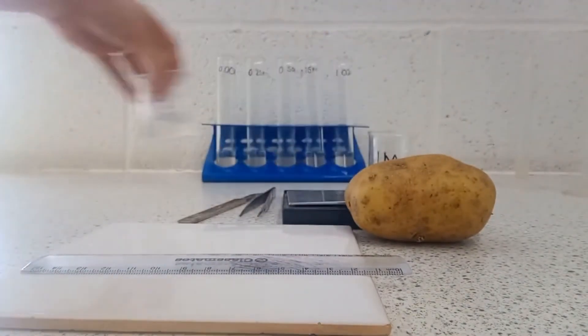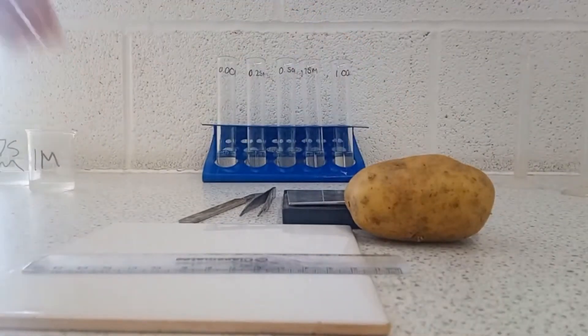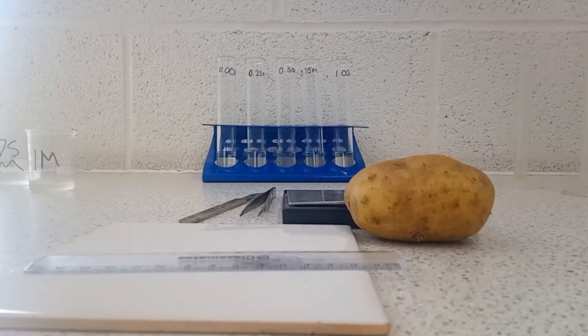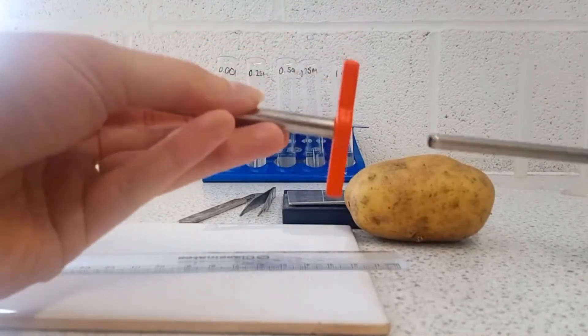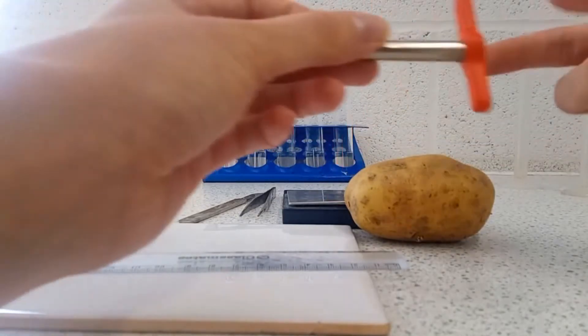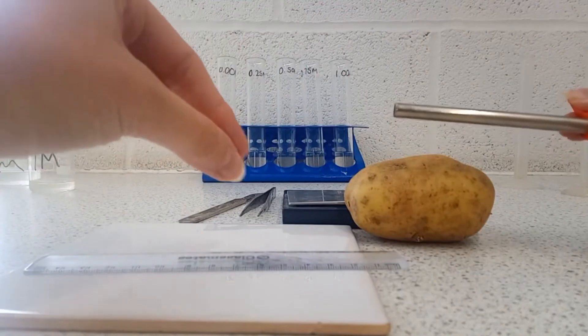In order to ensure that I have pieces that are as similar sized as possible, I use this piece of equipment called a cork borer, and I insert this into the potato, and this will help me to cut pieces that have a consistent diameter.